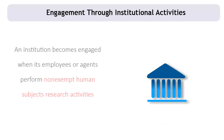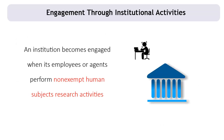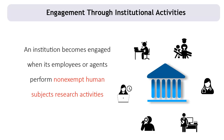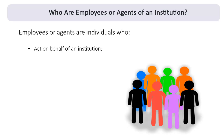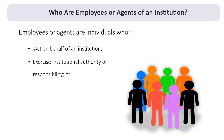We mentioned that one of the ways that an institution becomes engaged is when its employees or agents perform HHS-supported or conducted non-exempt human subjects research. For the purposes of engagement, who are considered employees or agents? OHRP considers employees or agents to be individuals who act on behalf of an institution, exercise institutional authority or responsibility, or perform institutionally designated activities.